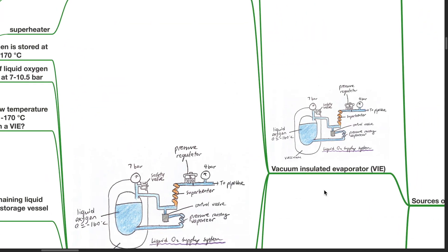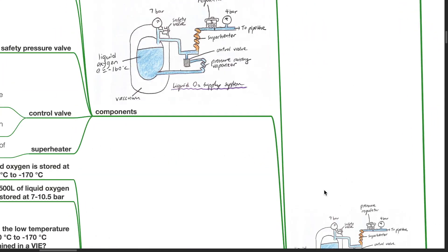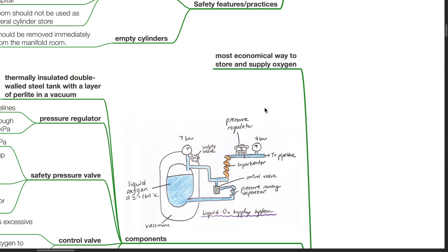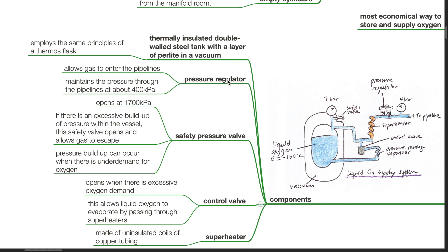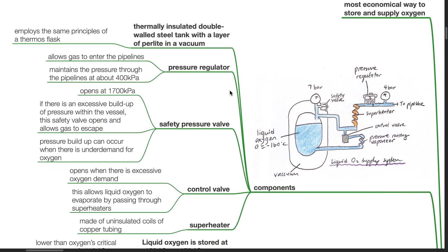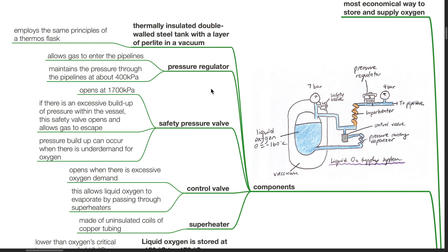Vacuum insulated evaporator: It is the most economical way to store and supply oxygen. Components include a thermally insulated double wall steel tank with a layer of perlite in a vacuum. It employs the same principles of a thermos flask. Pressure regulator allows gas to enter the pipelines and maintain the pressure through the pipelines at about 4 bar. Safety pressure valve opens at 1700 kPa.